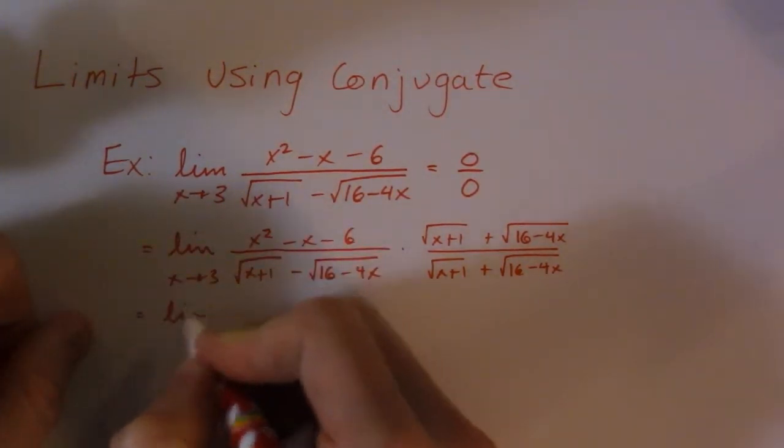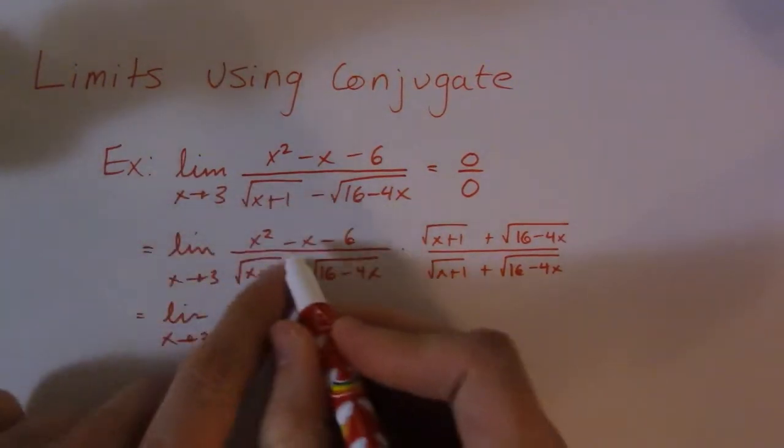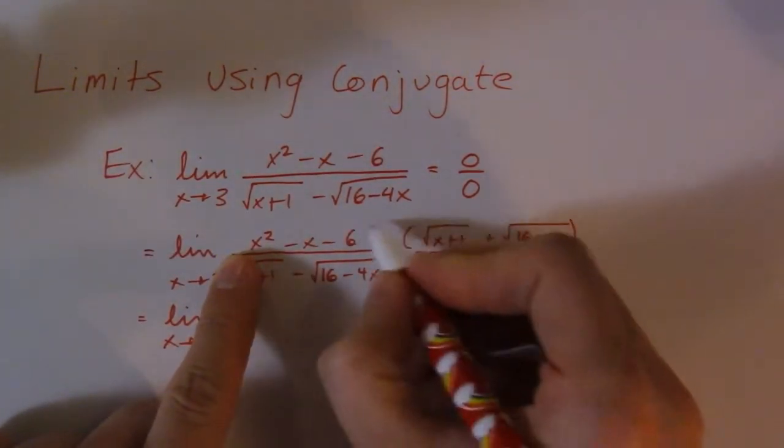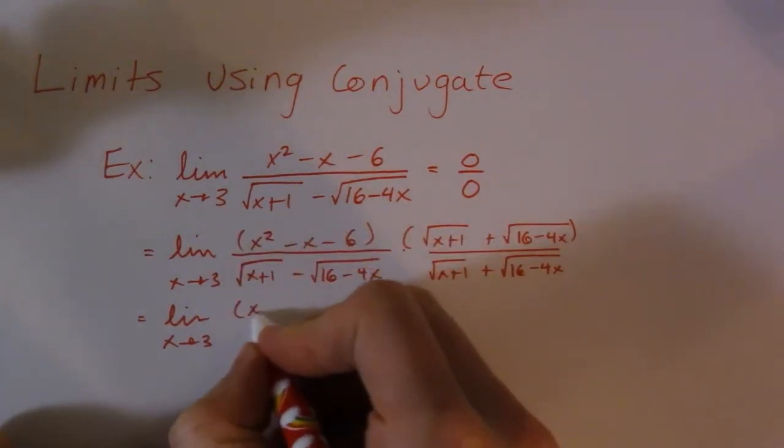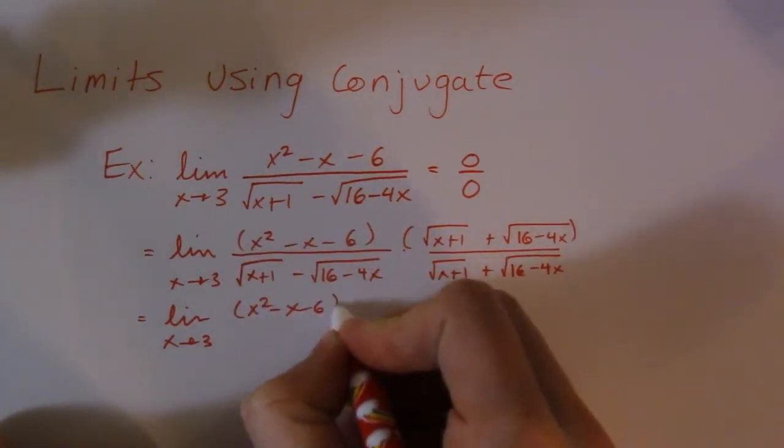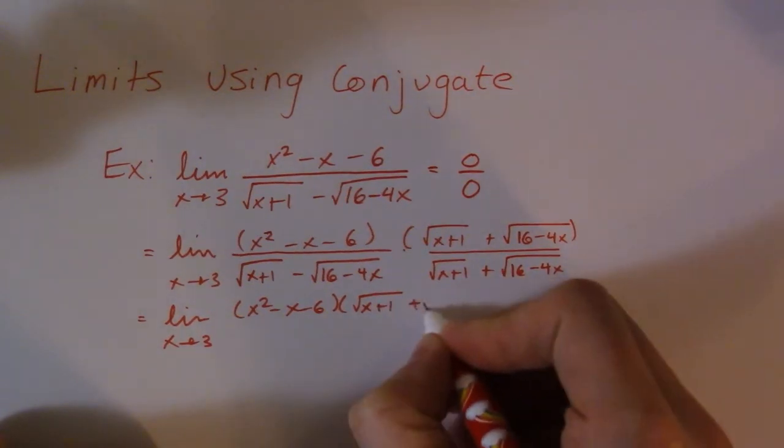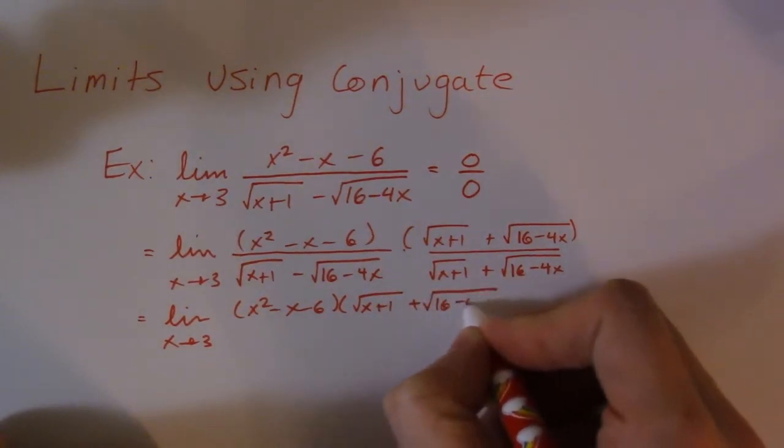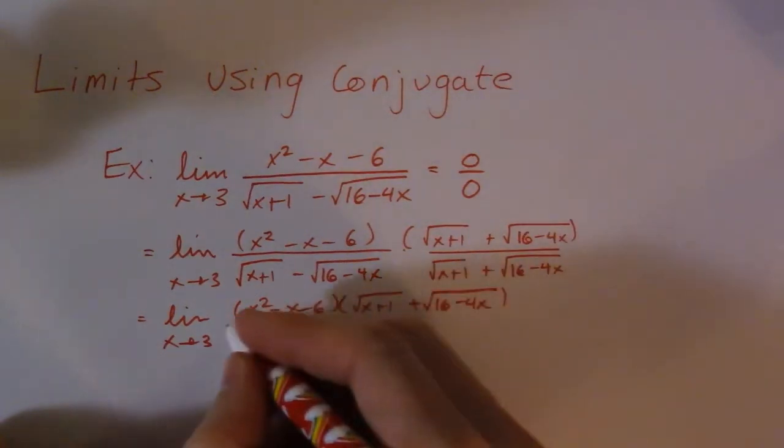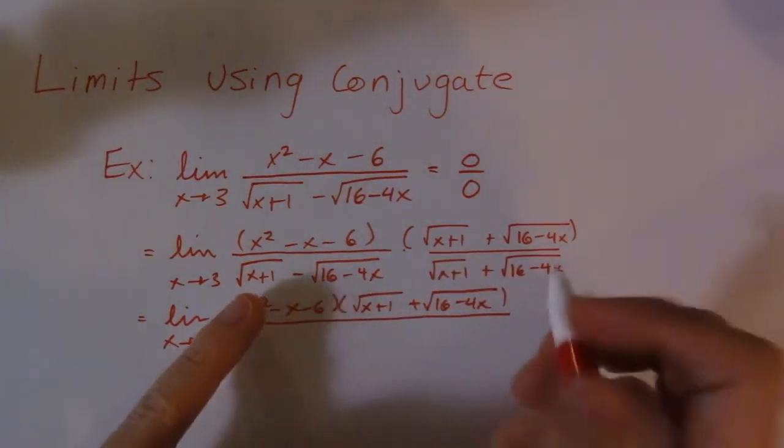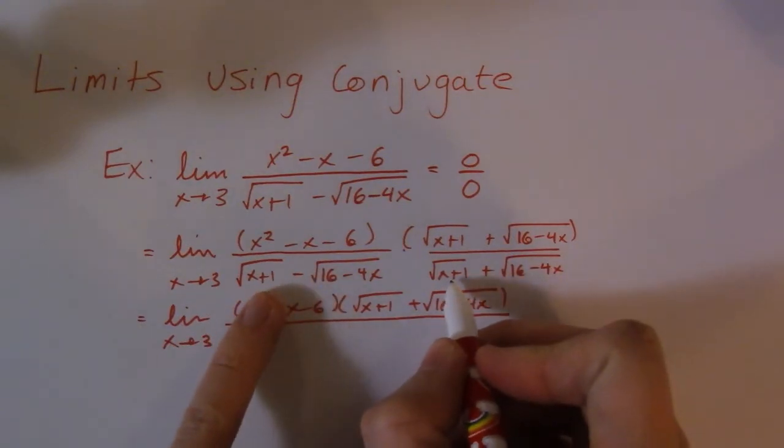So the rule I always use is the part that I'm not conjugating, which in this case is the top, I never touch. All I do is really just rewrite them exactly how they are, put them together, but I don't actually distribute or foil them or anything like that unless I get to a situation where I have no other choice. So sometimes that happens, but not very often. The majority you're going to get on a calc exam, you won't have to do that.